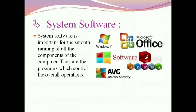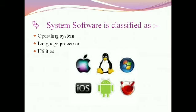Now we are going to listen about the classification of system software. There are three types: operating system, language processor, and utility software. First of all, we are going to learn about the operating system.